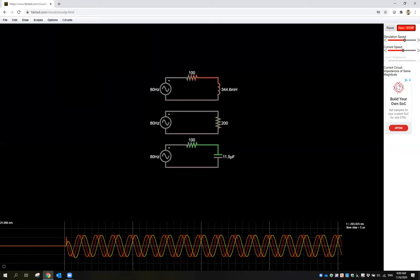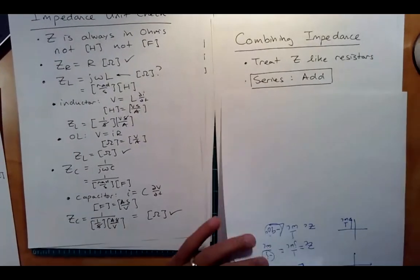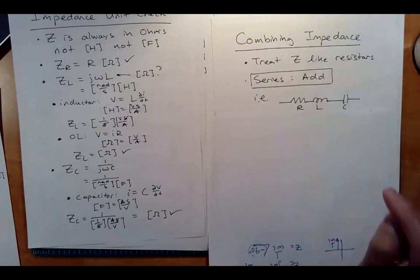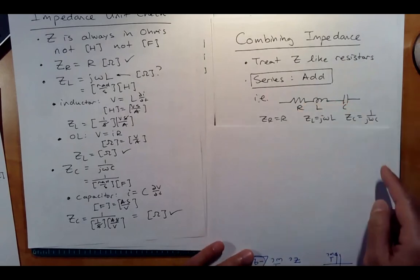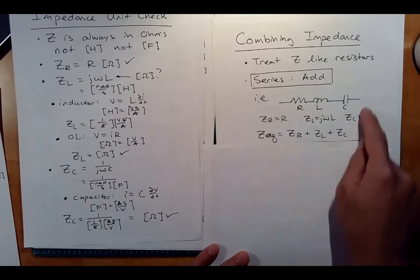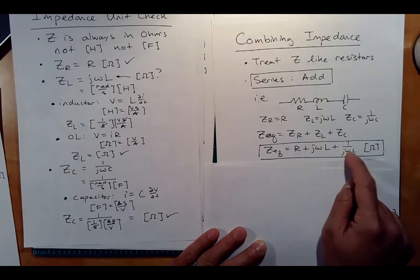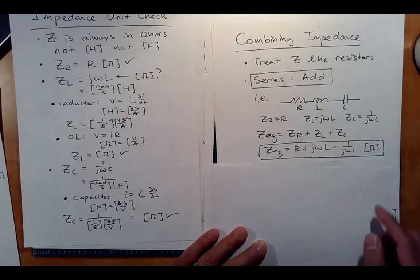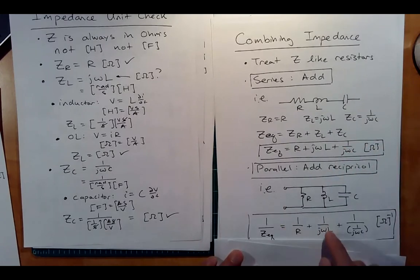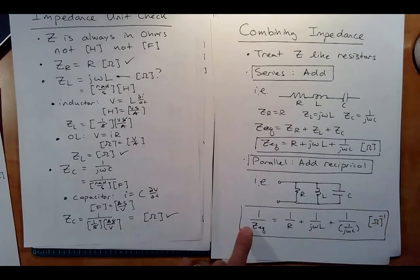Let's combine impedances. Treat them like resistors: when in series, just add them. ZR equals R, ZL equals jωL, ZC equals 1 over jωC — the equivalent series impedance is just the sum of all three. For parallel, you add the reciprocals: 1 over R plus 1 over jωL plus 1 over (1 over jωC). The result is in inverse ohms, but no problem.